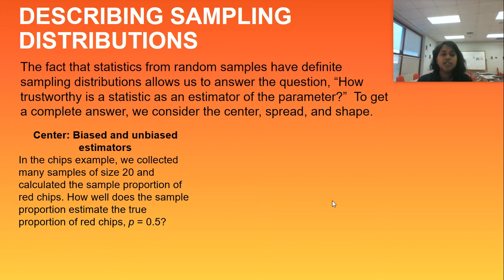So in the chips example, an example we will be doing in class, we collected many samples of size 20 and calculated the sample proportion of our red chips. How well does the sample proportion estimate the true proportion of red chips? And if you were absent for this day in class, this activity can be found on page 426, and it's used throughout this chapter 7.1. So please do get a chance to read through that or ask your classmates about that activity. We purposely created a sample set with a probability of 50% being red to begin with.